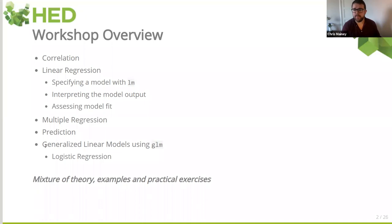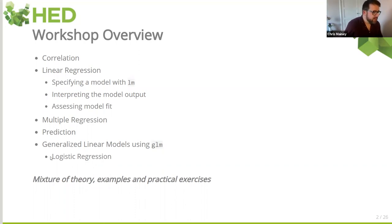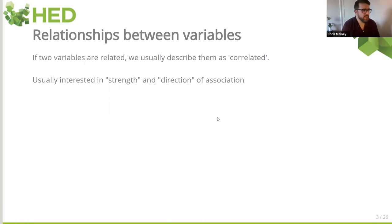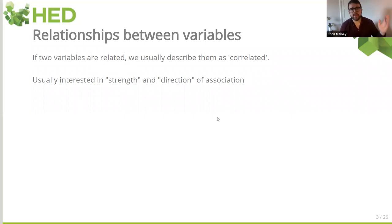We'll also look at, once we understand a linear model, how we apply the same idea to data that isn't linear — something like a binary outcome. So if we had a model to predict deaths or readmissions, where people are a zero or one, true or false — how could we do that? We'll look specifically at logistic regression, which is an extension through a so-called generalised linear model.